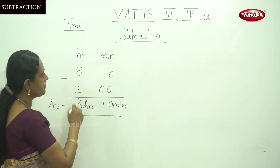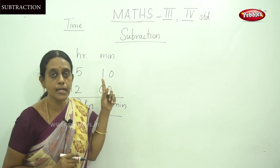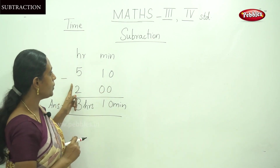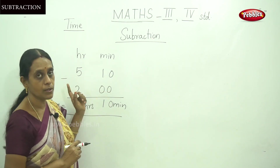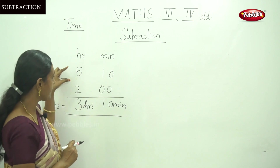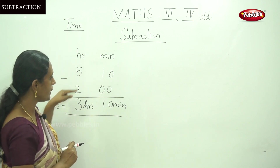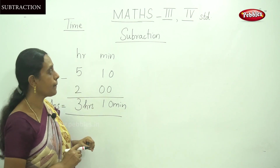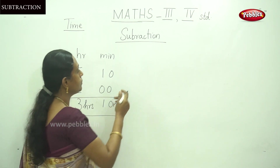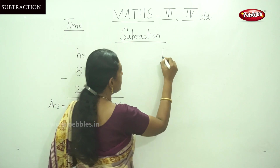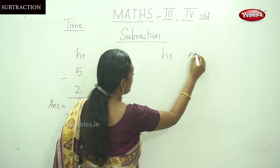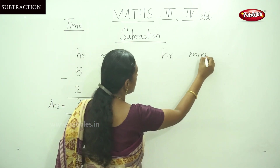That is 5 hours 10 minutes minus 2 hours. That means 5 minus 2 is 3, and here 10 minutes remains. And one more example for hour and minute.